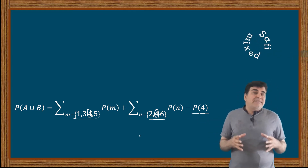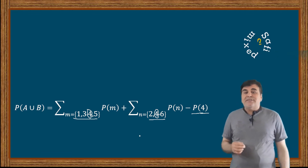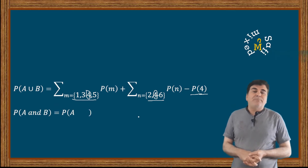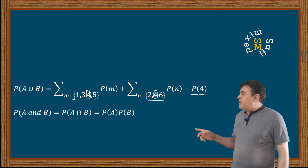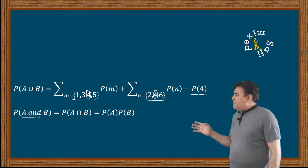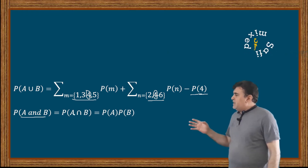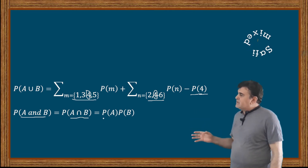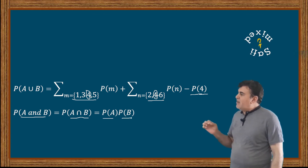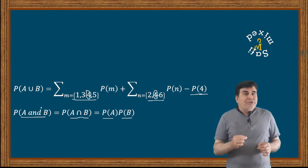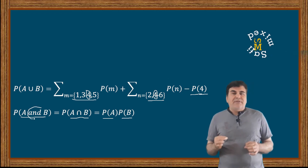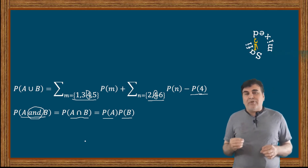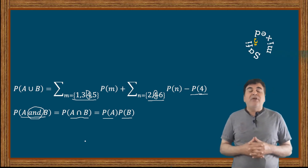Finally, if the two events A and B are independent events, their joint probability is written as the product of their individual probabilities. That is, the joint probability of A and B is: P(A and B) = P(A ∩ B) = P(A) · P(B). The 'and' here shows that the occurrence of one event is independent from the occurrence of the other event.